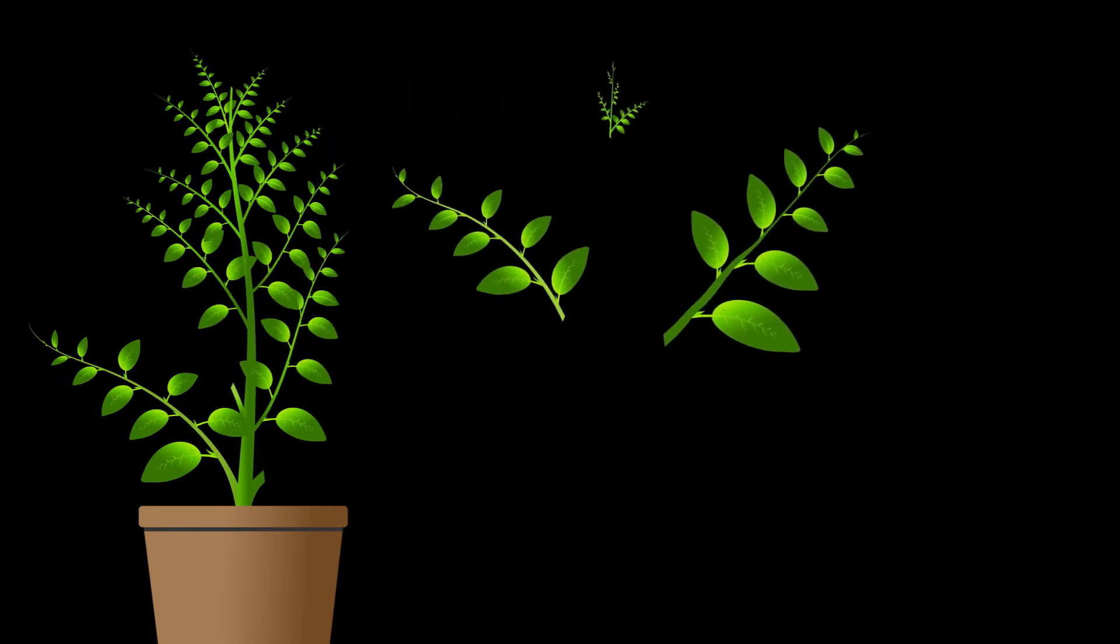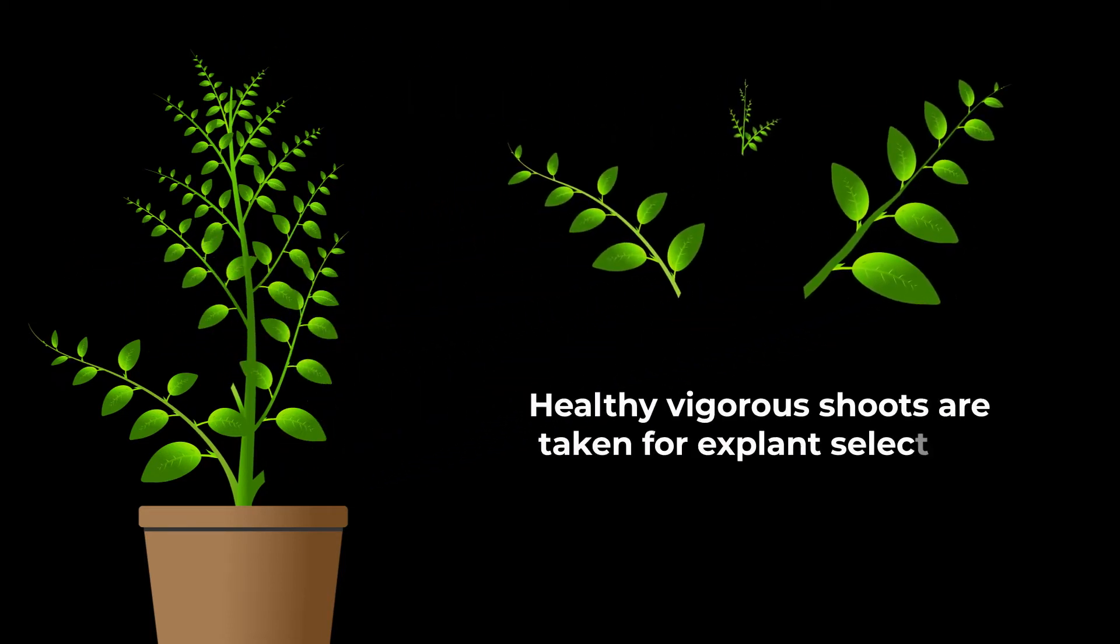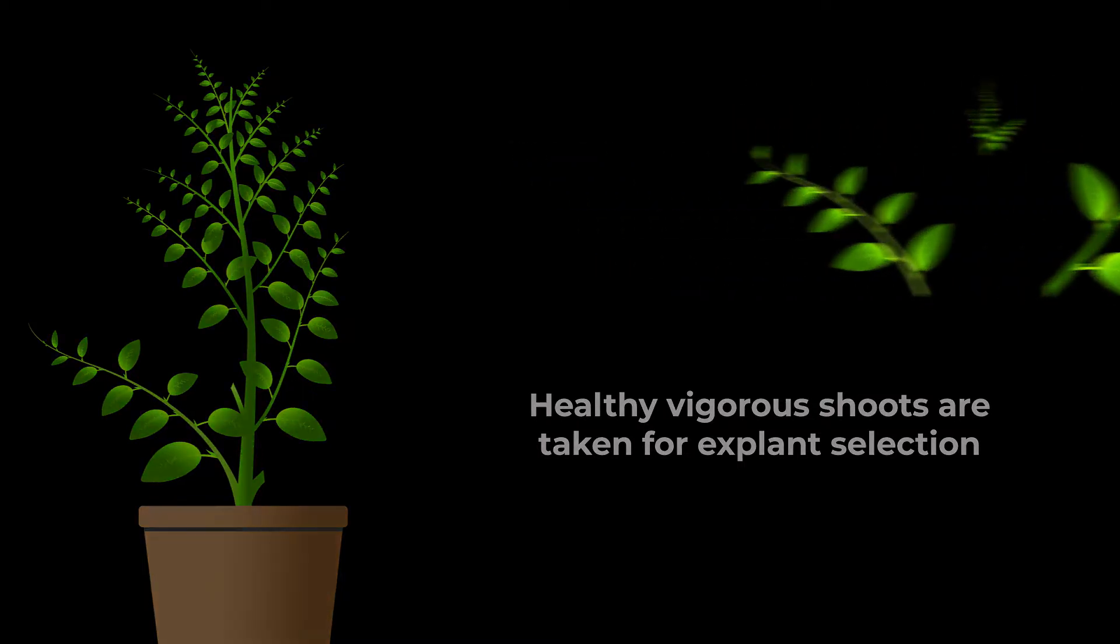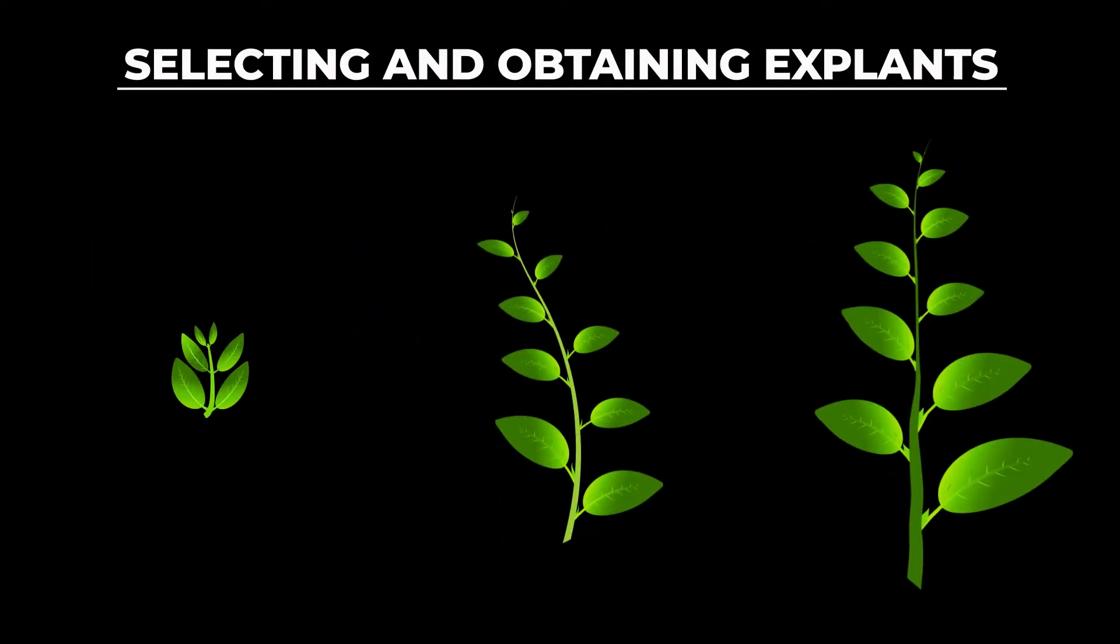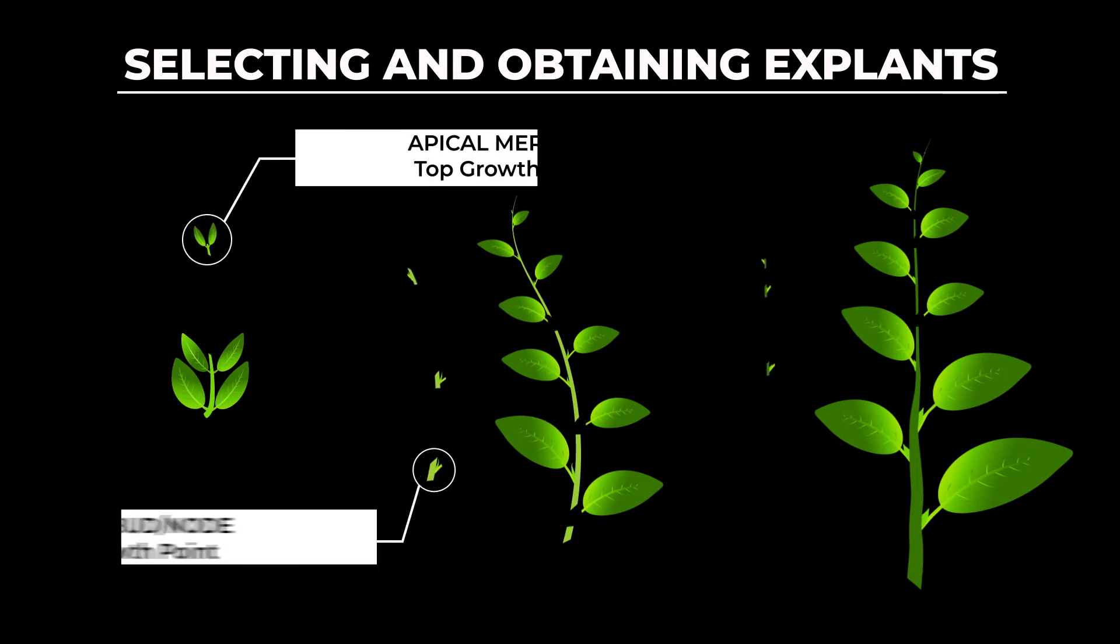To get these explants, we take healthy, vigorous shoots off the main plant and move them into the lab. Then we cut out smaller pieces of these shoots or excise them. Those pieces, the apical meristem or lateral node, will then be cleaned.